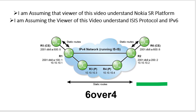Welcome everyone. In this video we are going to cover IPv6 over IPv4. We have two CE routers, CE R5 and R6, which have IPv6 system IP addresses. We need to ensure that R5 can ping the R6 system IP address and R6 can ping the R5 IPv6 system IP address. We will achieve this with the help of static routes. We have R5 and R1 CE-to-P IPv6 connectivity, and R2 and R6 IPv6 connectivity.